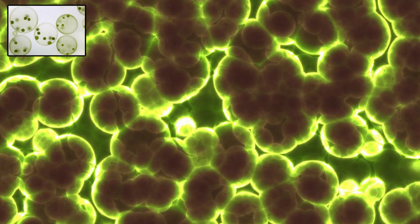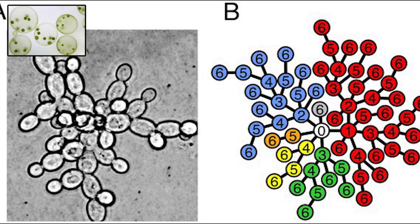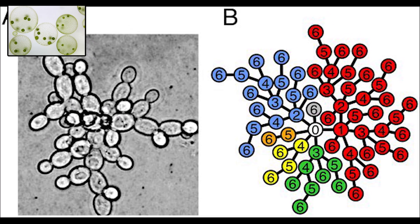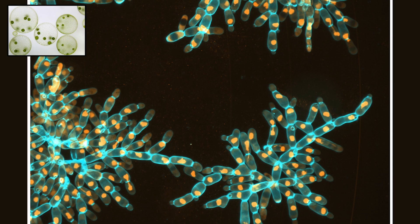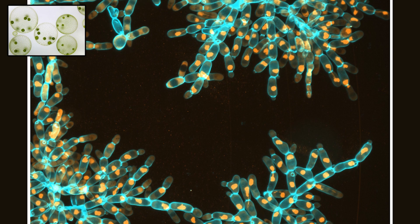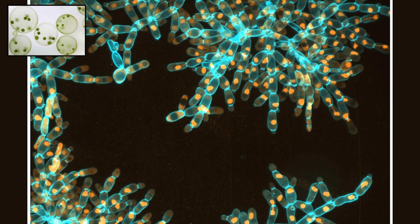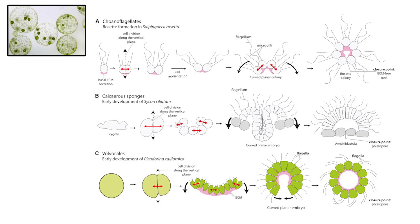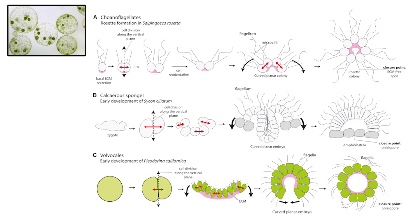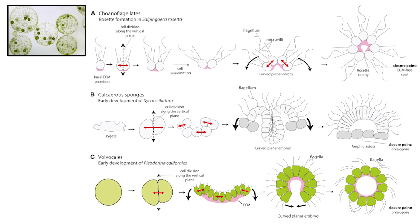Multicellularity involves individual cells coming together and operating as a coordinated unit, each performing specific functions for the organism. Emerging around 1.5 billion years ago, multicellularity transformed life on Earth by enabling cells to specialize. In a multicellular organism, cells divide roles similar to sports teams where each player has a unique responsibility.